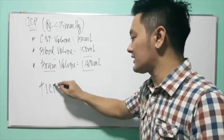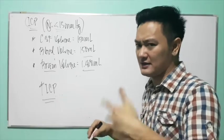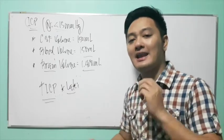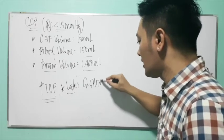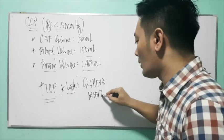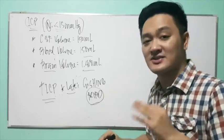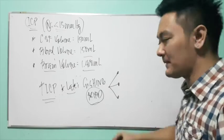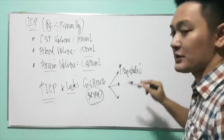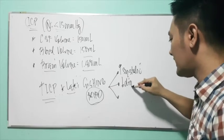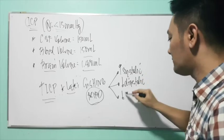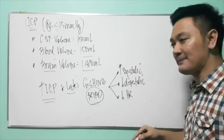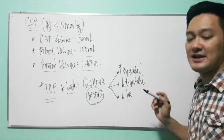If a patient is having increased intracranial pressure, you have the signs and symptoms in your reading materials. I want to emphasize the late manifestation of increased ICP, which is called Cushing's Triad. It has three presentations: first, an increase in systolic blood pressure; second, a decrease in diastolic pressure; and third, a decrease in heart rate.